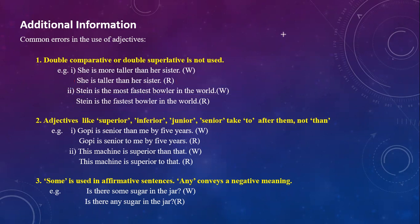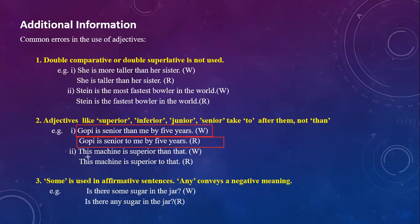Adjectives like superior, inferior, junior, and senior take the preposition 'to' after them, not 'than.' Example: 'Gopi is senior than me by five years' is wrong. 'Gopi is senior to me by five years' is right. 'This machine is superior than that' is wrong. 'This machine is superior to that' is right.